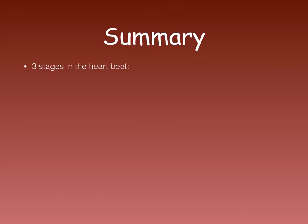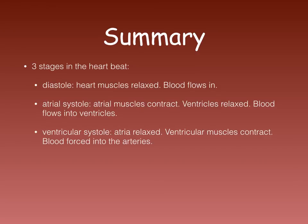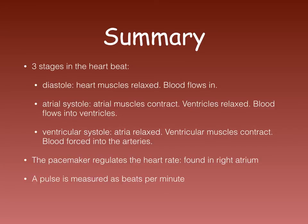In summary, we've looked at the three stages in the heartbeat. Diastole — heart muscles are relaxed and blood flows into the heart. Atrial systole — the atrial muscles contract, ventricles are relaxed, and blood flows from the atria into the ventricles. Ventricular systole — the atria are relaxed, ventricular muscles contract, forcing blood into the arteries. The pacemaker regulates the heart rate and is found in the right atrium. A pulse is measured as beats per minute, found by feeling for an artery running over a bone or tendon close to the skin. The heart rate and breathing rate also increase with exercise.